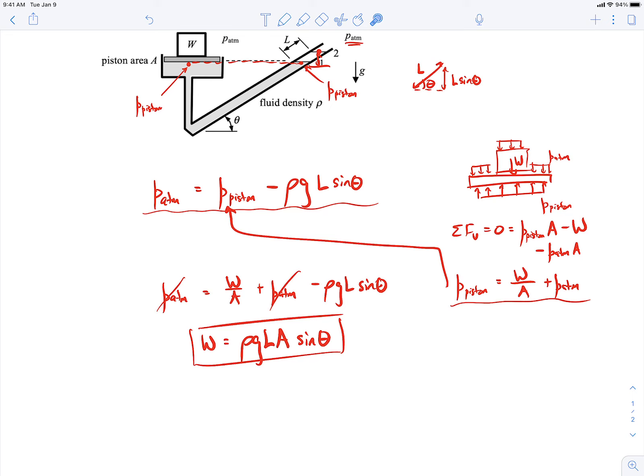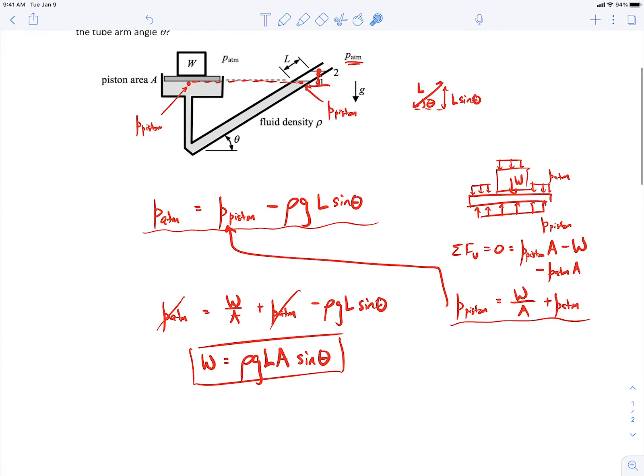Okay, so this really involves just a couple of items that we have to be aware of. Number one is just how to analyze the manometer. Probably the trickiest parts of this manometer analysis are just knowing that we need the vertical distance in the tube here, not the distance along the arm, but it's just the vertical distance, so it's L sine theta.